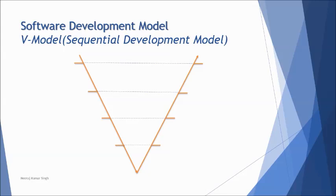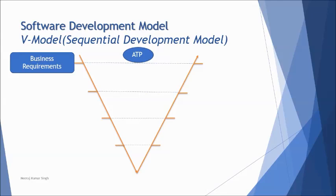There are four major good characteristics of testing, and I'll explain them using the V-Model. The V-Model is a sequential model with relevant activities like business requirement gathering. When business requirements are gathered, we invite the acceptance test team to join the process early and contribute by finding defects in the documentation at an early stage. The same verified document may be used later at the acceptance testing phase.